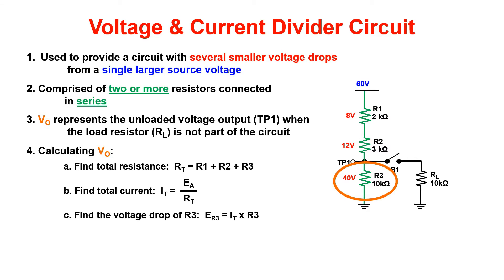To calculate VO, first find the total resistance for the series circuit. In this case, it is 15k. Then find IT. 60 volts divided by 15k gives us an IT of 4 milliamps. Now we can take our IT multiplied by the resistor value of R3 to get the voltage drop at test point 1. This is our VO.